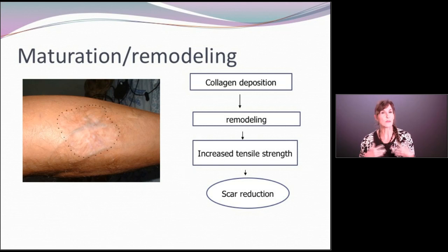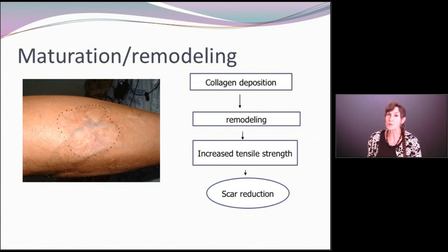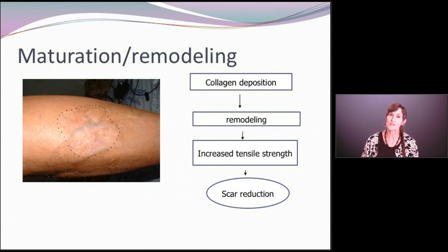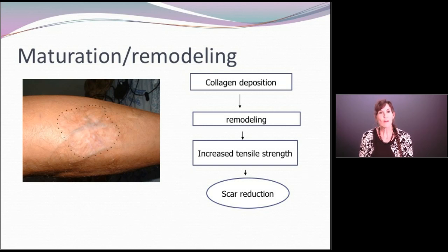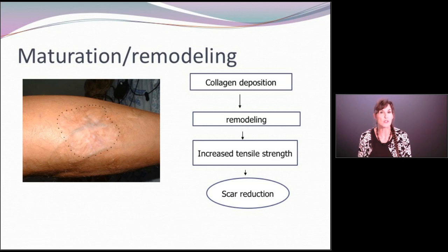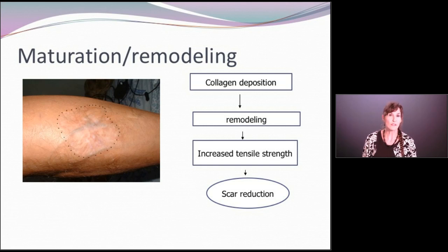What we see as the result is basically a scar. Maturation and remodeling can continue for a period of up to two years after the wound is actually closed, so even though the wound may appear healed, it is still healing. When a wound heals by tissue repair, you often will have a scar that does not have the same normal integrity as regular tissue — it is much more friable, will not have hair follicles, and may be hypo- or hyperpigmented in relation to the surrounding skin.